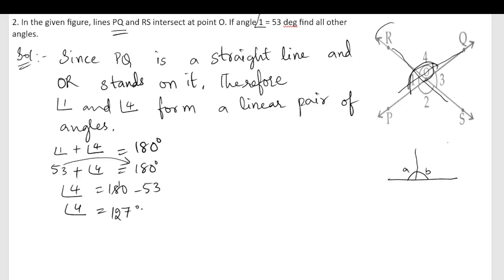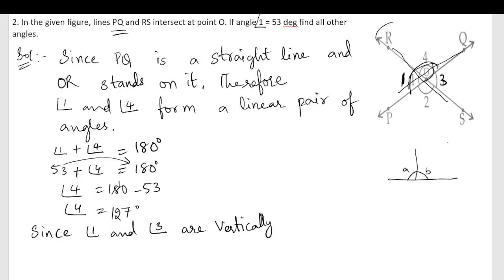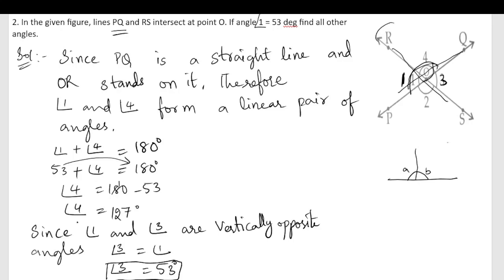Next, we can see that angle three is directly opposite angle one. We call these vertically opposite angles. Since angle one and angle three are vertically opposite angles, angle three is equal to angle one, so angle three equals 53 degrees.